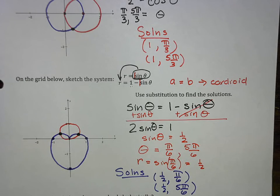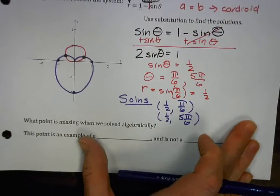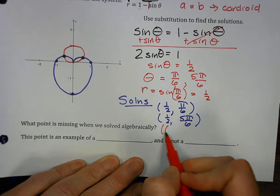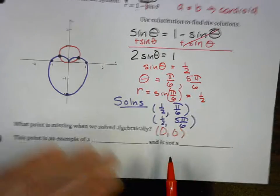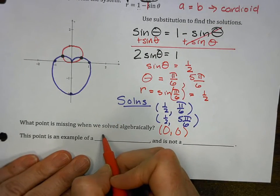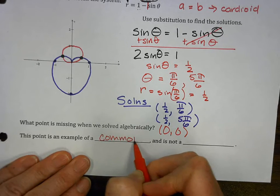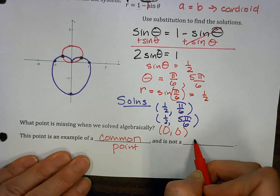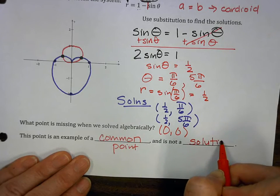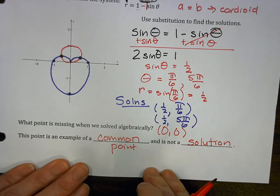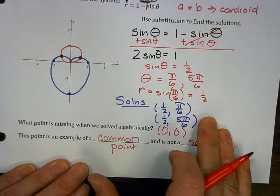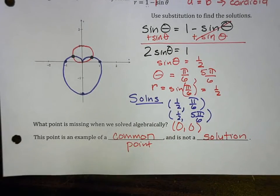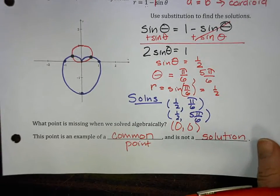So let's look. What point is missing when we solved algebraically? The point that's missing is the point zero, zero. This point is an example of what we call a common point. Common point and is not a solution. If an intersection is a solution, you can find it algebraically. If you see an intersection, but it's not found algebraically, it's called a common point.